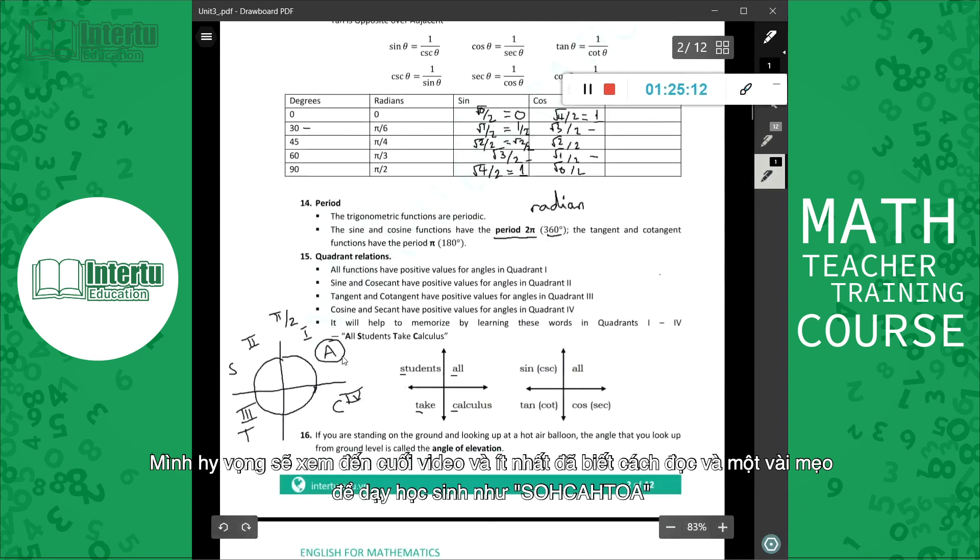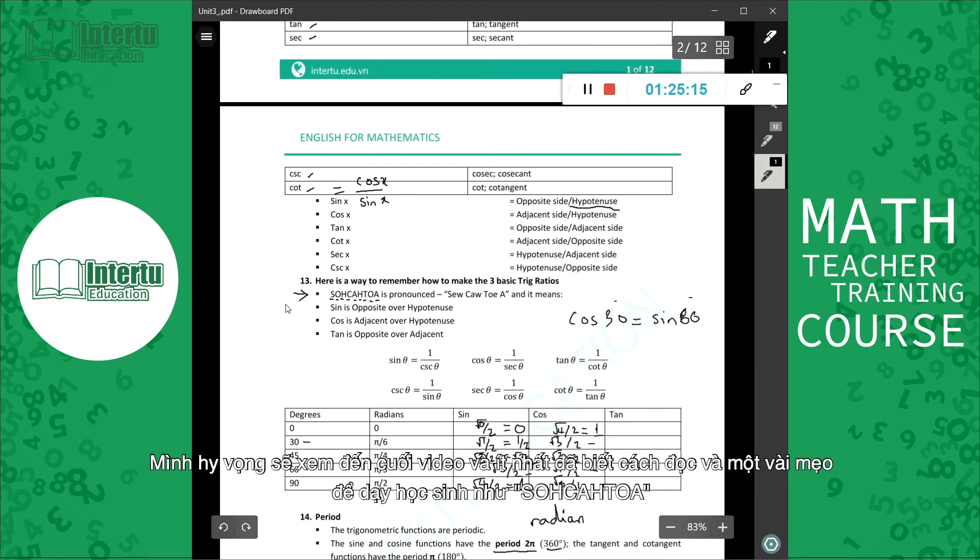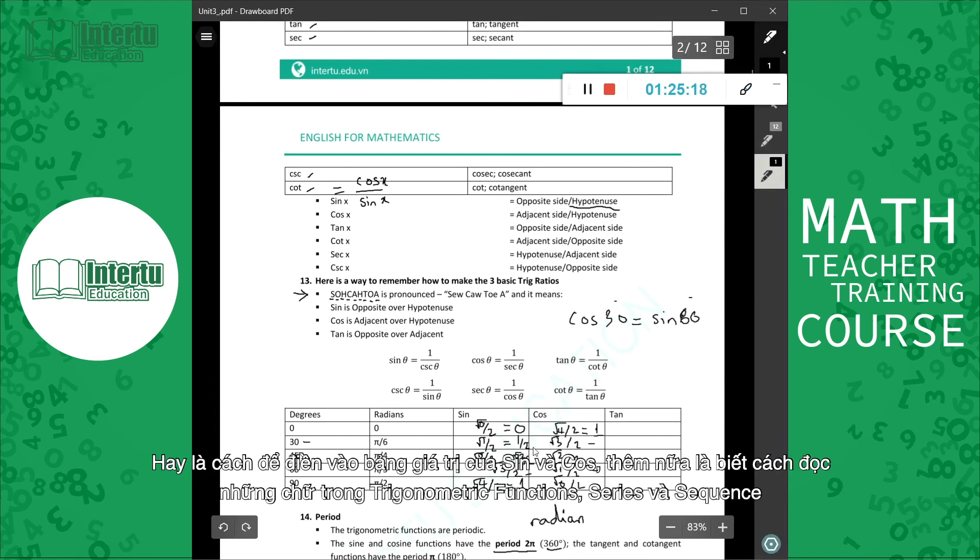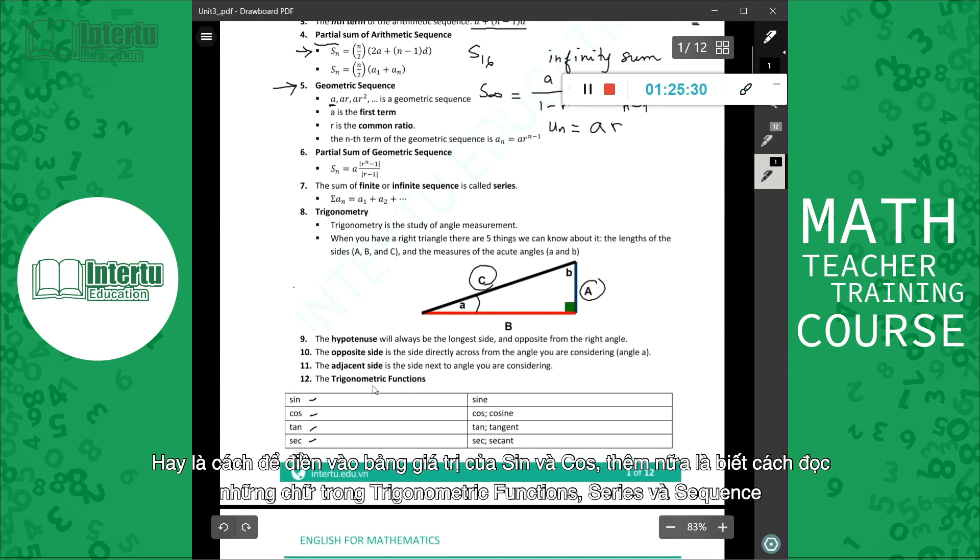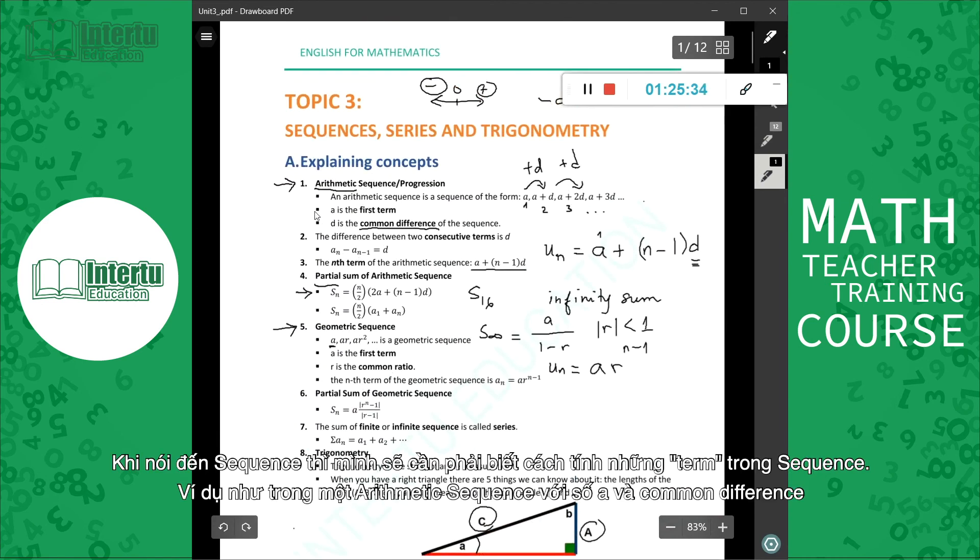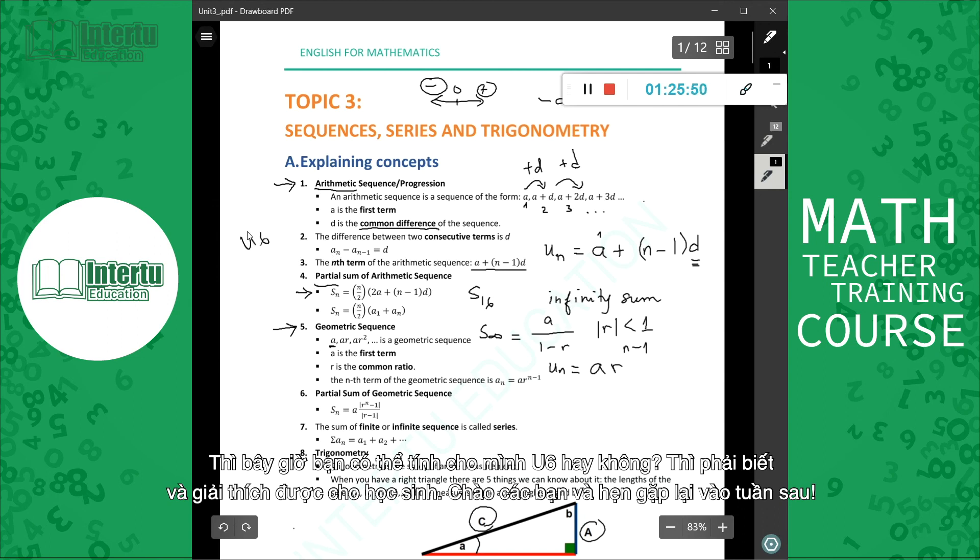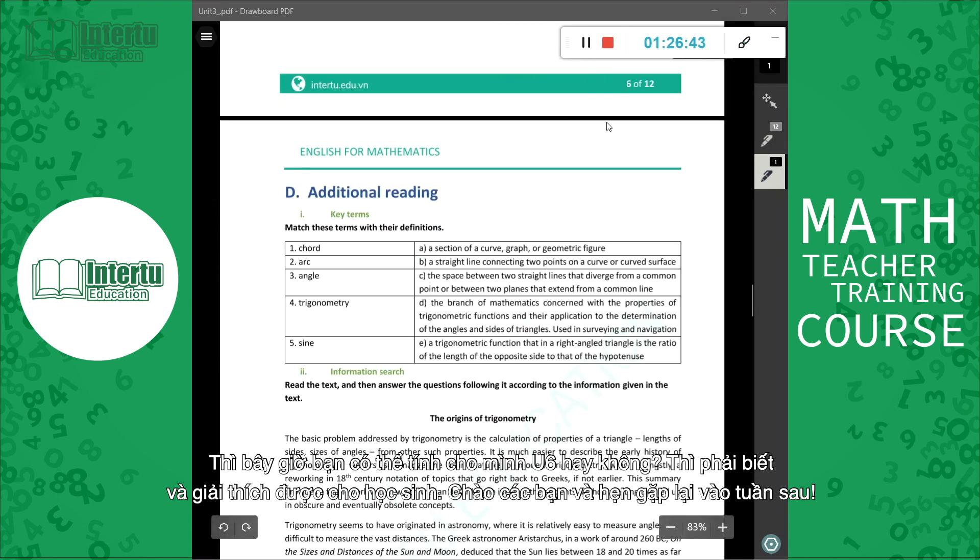[Vietnamese: So I hope you've watched to the end of the video and at least learned the pronunciation and some tips for teaching students, like SOHCAHTOA or the method for filling in the table of values for sine and cosine. And also know how to read all the letters and can explain the trigonometric functions, series and sequences. When it comes to sequences, you need to know how to calculate the terms in the sequence. For example, if I ask you: in an arithmetic sequence with A equal to this and common difference equal to this, can you calculate U6 for me? You must be able to explain this to students. Goodbye everyone, see you next week.]